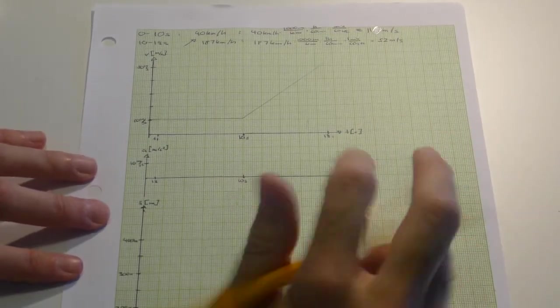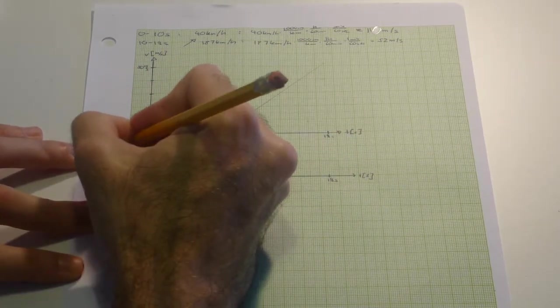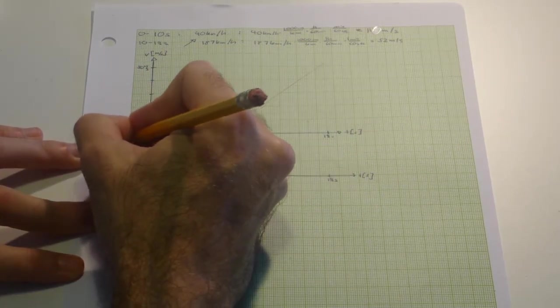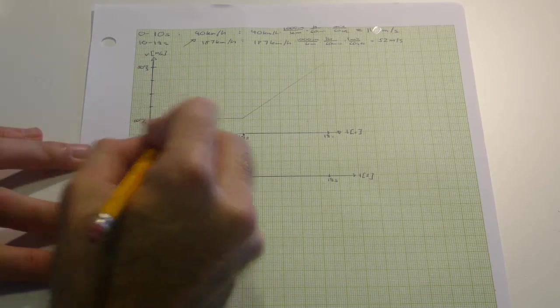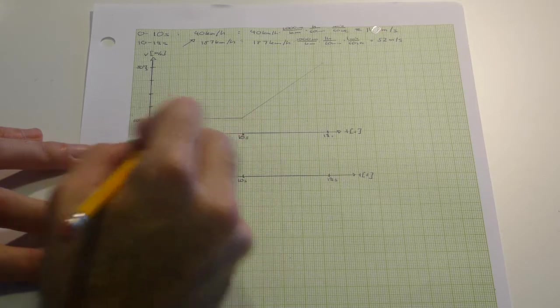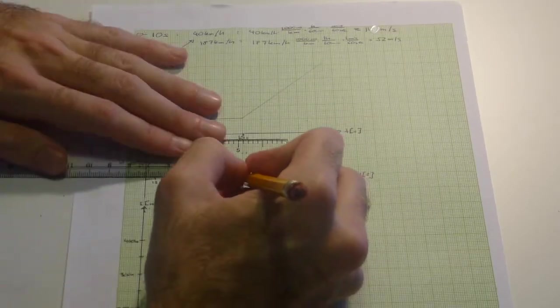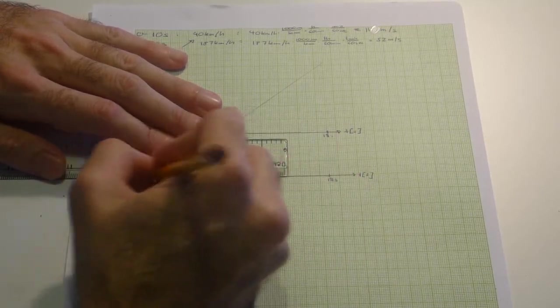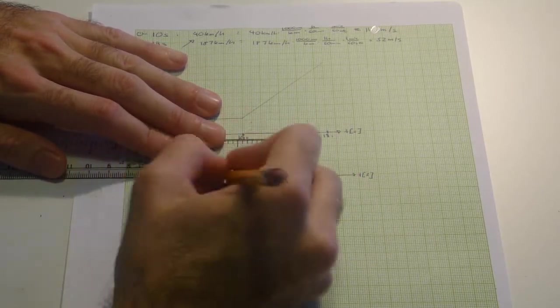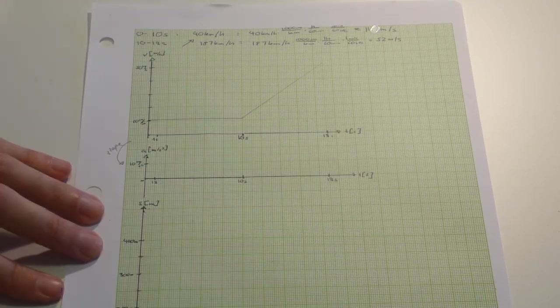Now let's look at the AT graph. The AT graph is the slope of the VT graph. Here we have zero acceleration because it's a straight line and the velocity did not change at all. Therefore our VT graph here is zero for the first 10 seconds.